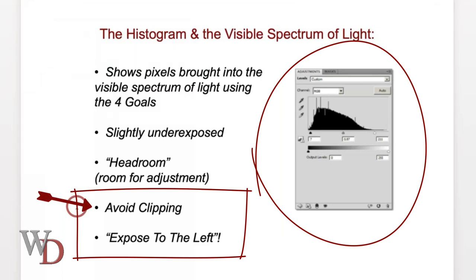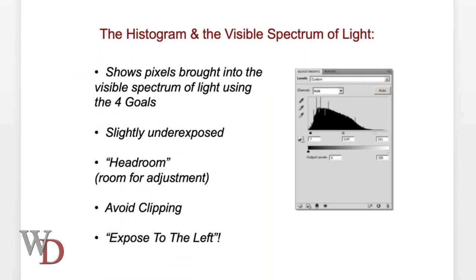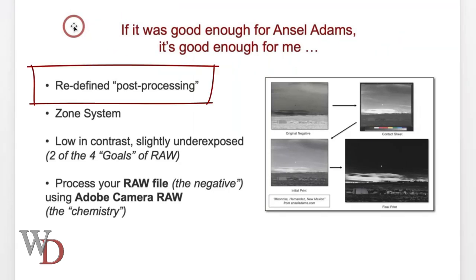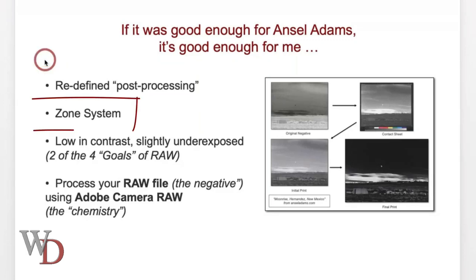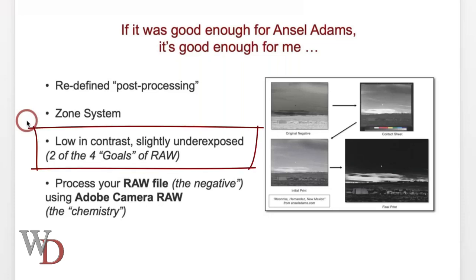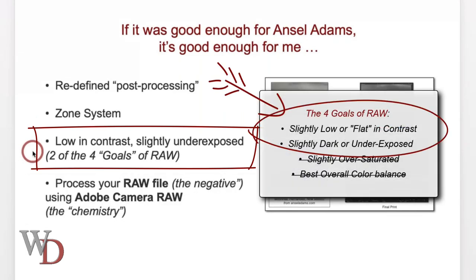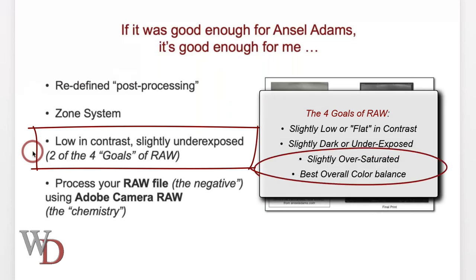This concept is called 'exposed to the left' — feel free to search for it online for more detail. The reason for it comes down to Ansel Adams: if it was good enough for him, it's good enough for me. Adams redefined post-processing and was a pioneer in turning printed photographs into an art form. Using the Zone System, Adams and his contemporary Fred Archer were famous for exposing and chemically processing their negatives to be slightly low in contrast and slightly underexposed, resulting in more detail in both the highlights and the shadows — just like two of our four goals.